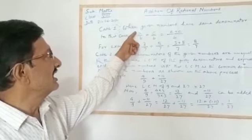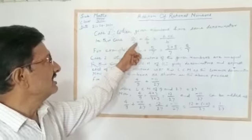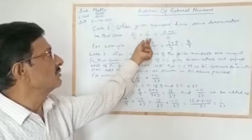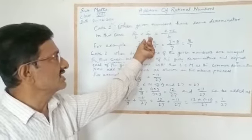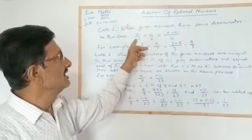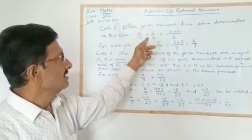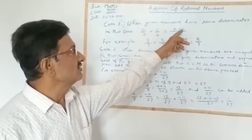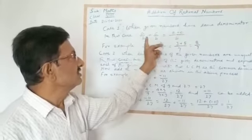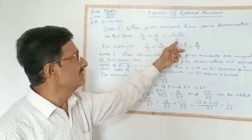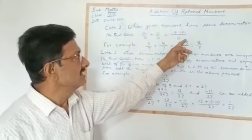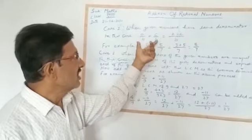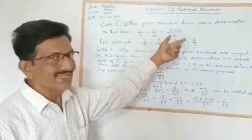For example, a/b plus c/b — here both the denominators are the same. So we will add their numerators according to the sign, giving us (a + c) / b. That will give you the sum of both rational numbers.